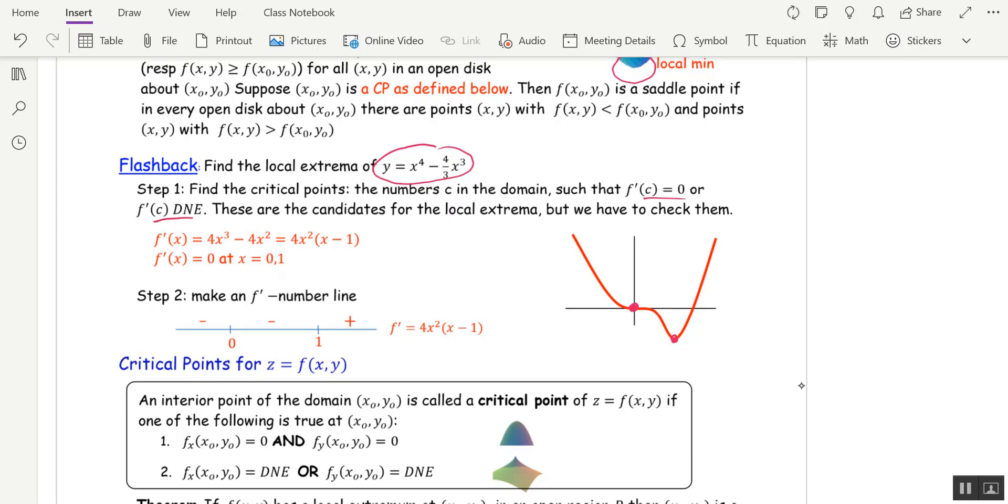I went ahead and found the first derivative and factored it so that I could find the zeros and I see that the first derivative is 0 at x equals 0 or 1. That doesn't mean I have a local max or local min. I have to check it with a first derivative number line. That was step 2. So I plot the critical points and I'm going to test the sign of f prime.